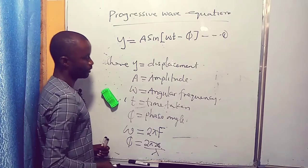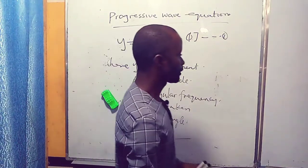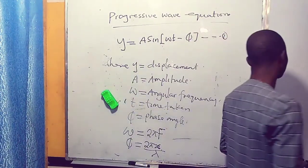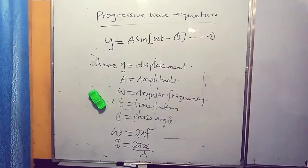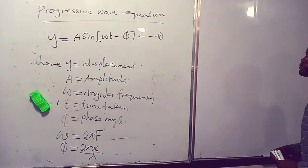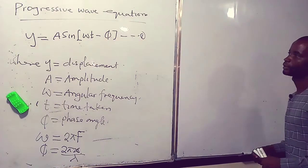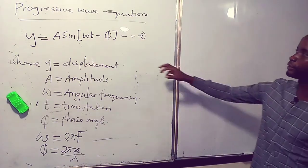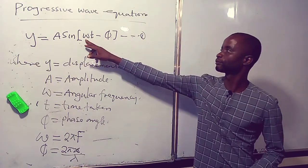Now let's substitute these values into equation 1. In equation 1 we are going to substitute the values of ω and φ.